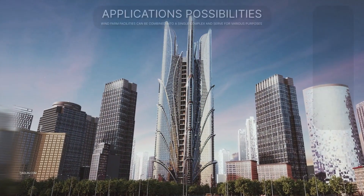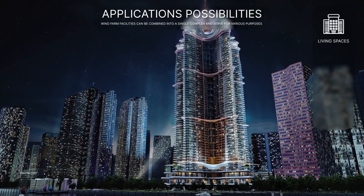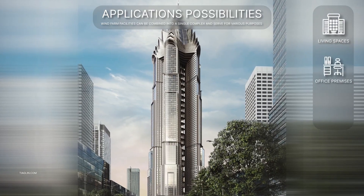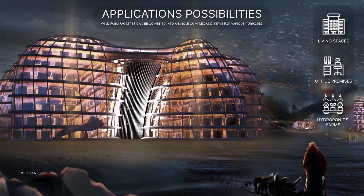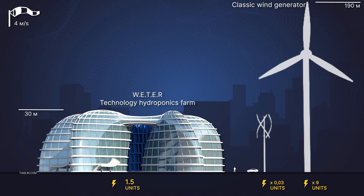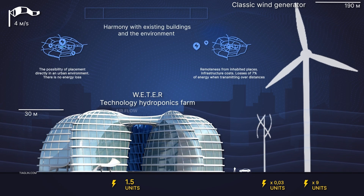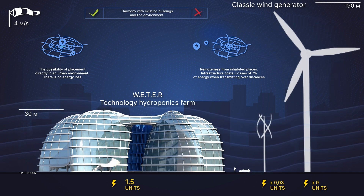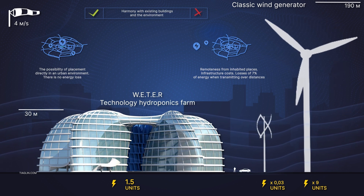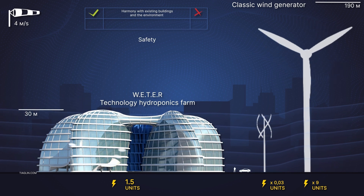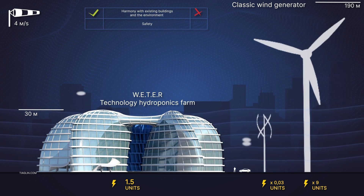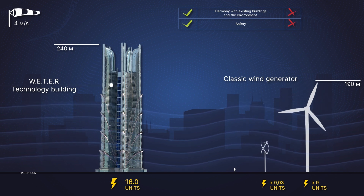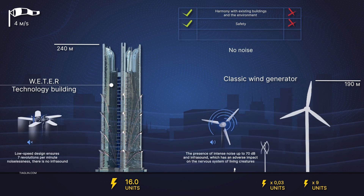Possibilities of application include residential spaces, office spaces, and vertical hydroponic farms. The Viter building harmonizes with the existing buildings and the environment. The low-speed design in the Viter project ensures that there is no noise and no infrasound.